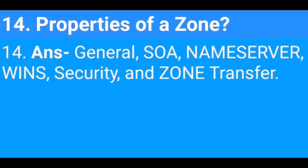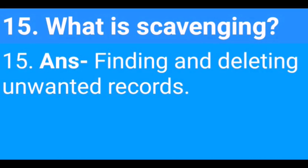What are the properties of a zone? The properties of a zone are: General, SOA, Name Server, WINS, Security, and Zone Transfer. What is Scavenging? Finding and deleting unwanted records is called scavenging.